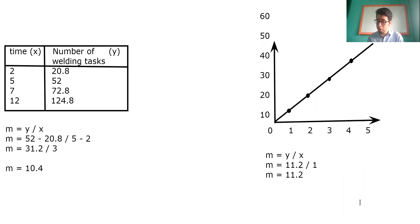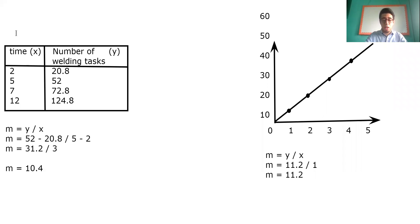Now we can go to example 2, located on page 173. This is something similar — we need to compare a table and a graph. But in this case, the graph is not a straight line; the graph is represented by a curve. This is comparing linear and non-linear functions.